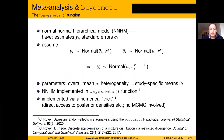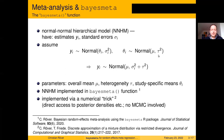So far in the base meta package, the simple normal-normal hierarchical model was implemented. We have a number of estimates yi along with their standard errors sigma_i. The assumption is that these estimates are measuring a true parameter theta_i with some uncertainty given by the standard error. These true values are not necessarily identical across studies — they have variation given by the heterogeneity variance tau squared. The parameters of interest are the overall mean mu, the heterogeneity tau, and sometimes the study-specific means theta_i for shrinkage estimation.